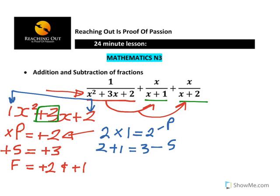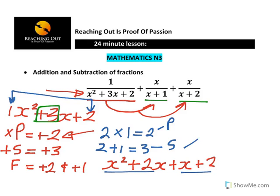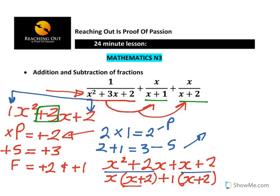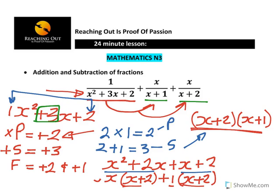I can rewrite the expression as x squared plus 2x plus x plus 2. Focusing on the first two terms, x is common, giving x(x plus 2). For the last two terms, taking out 1 gives 1(x plus 2). So the factorized form is (x plus 2)(x plus 1). You can see that x plus 2 and x plus 1 are linked to the other denominators.